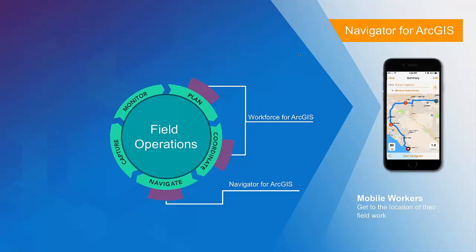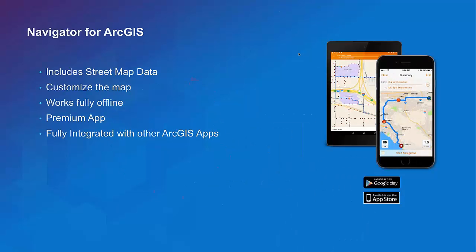Moving to the next application — focused on the need to get to the location of your work — that's accomplished using the product called Navigator for ArcGIS. Navigator for ArcGIS is a pretty exciting application we introduced this year, and John's going to show you a bit about what they've been doing with it later. Navigator includes street map data — because it is a premium application licensed per named user within your organization. It includes street map data for navigation across land with a vehicle, but you can customize the map. It works completely offline and has the look and feel of a consumer navigation app, but it's fully integrated with all other ArcGIS applications.